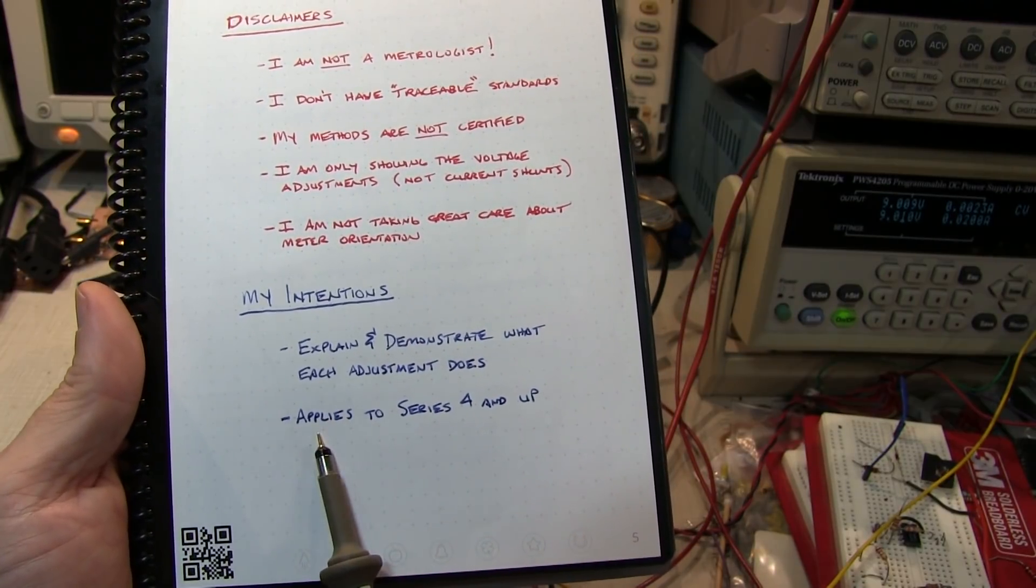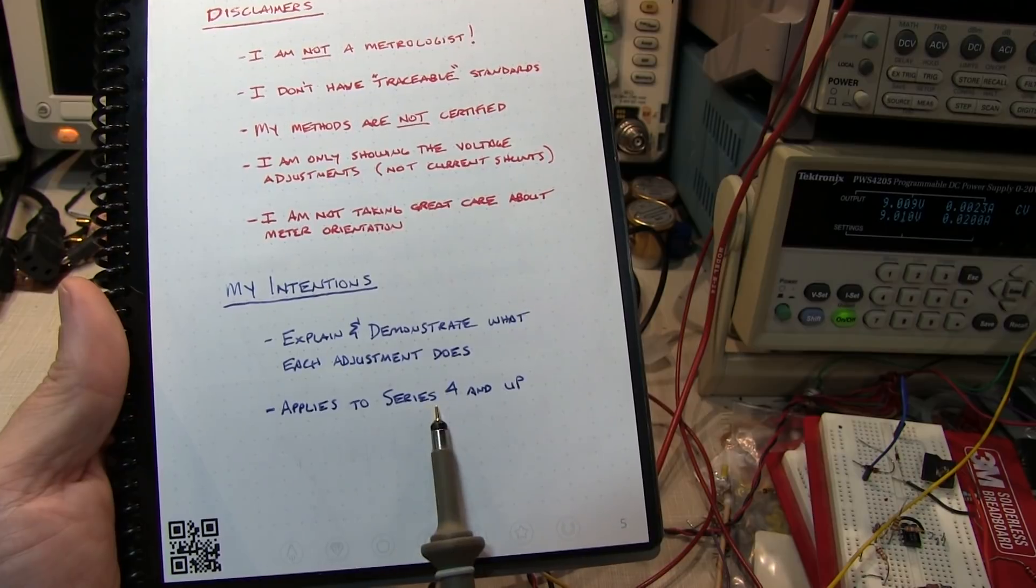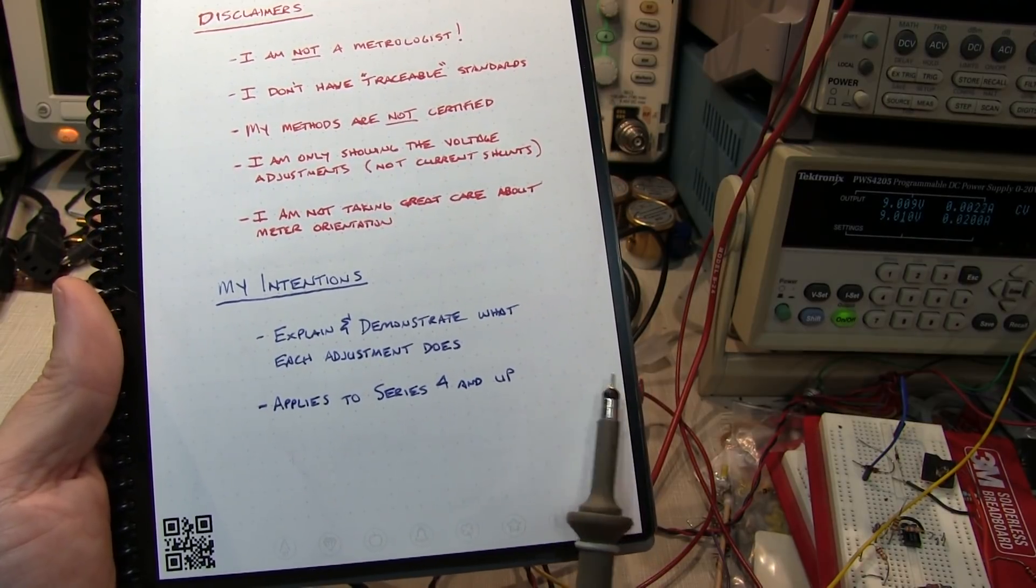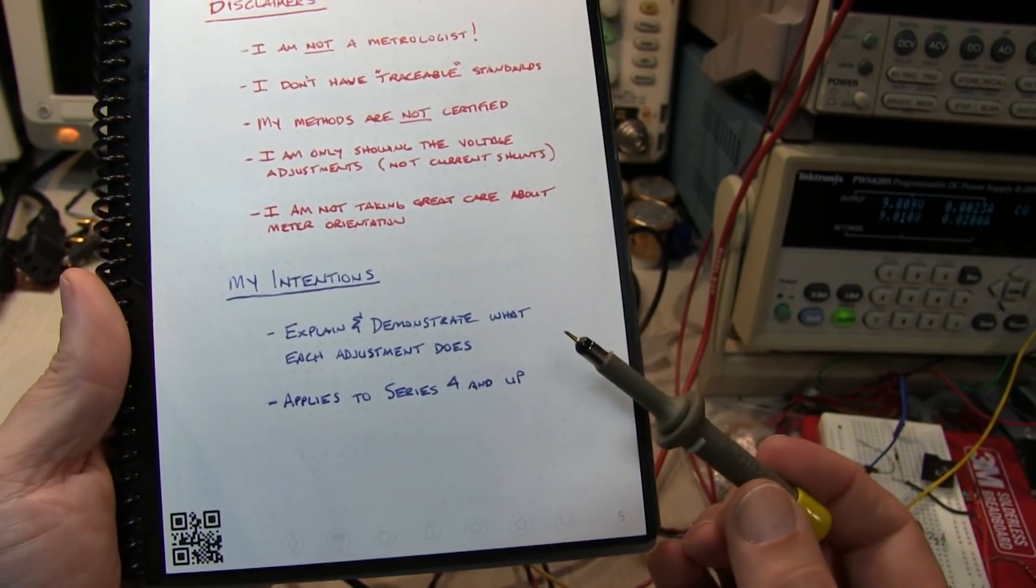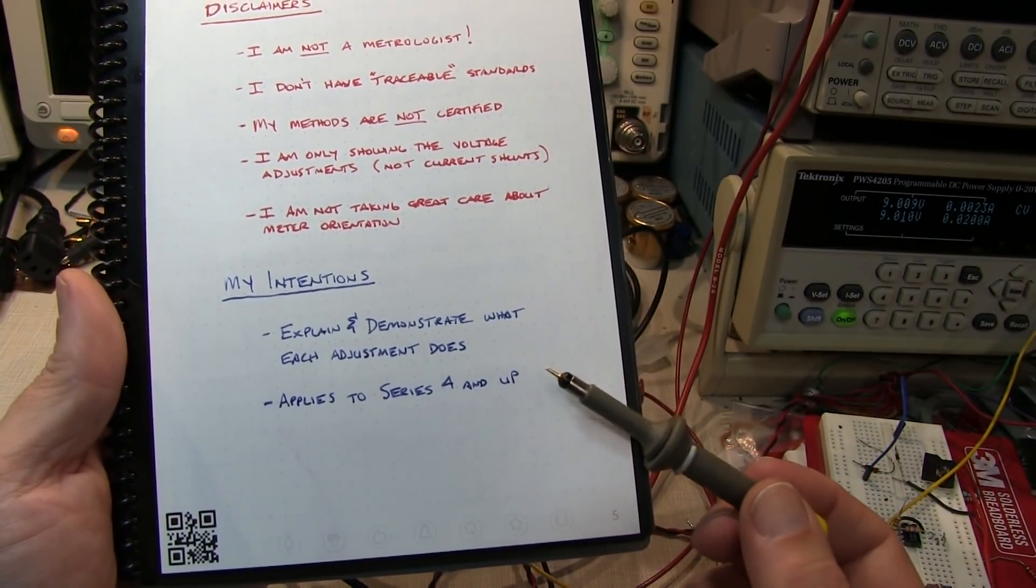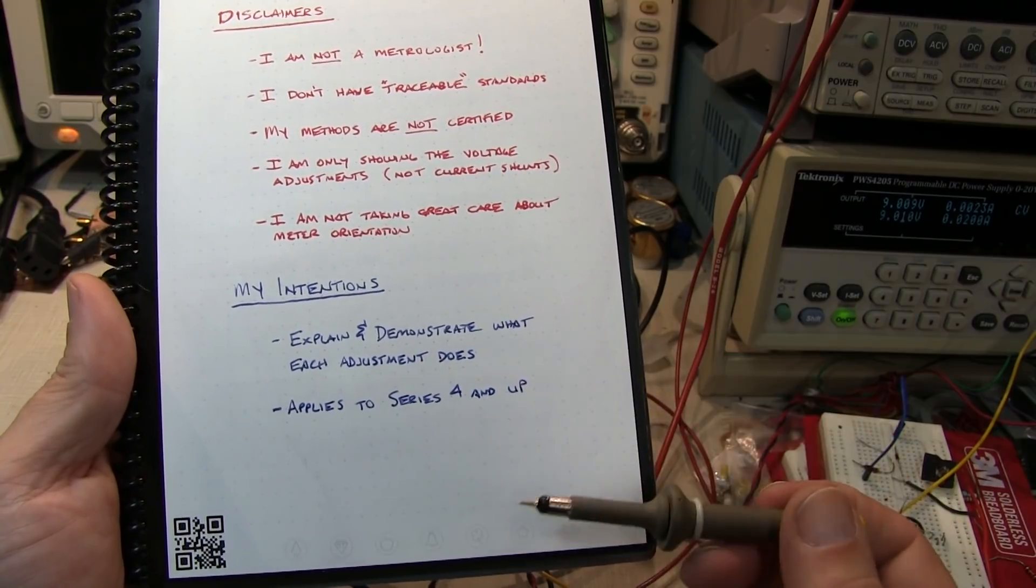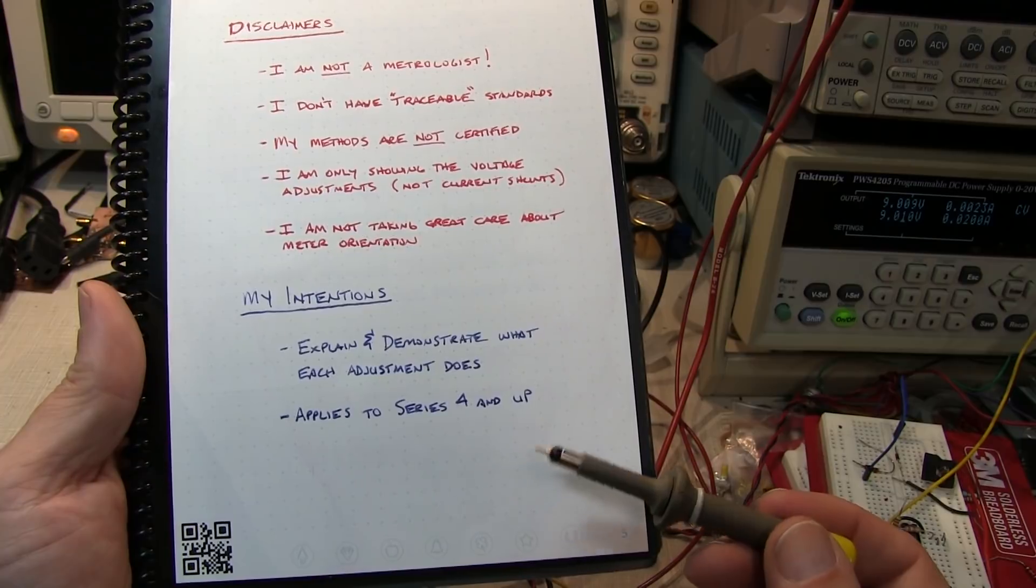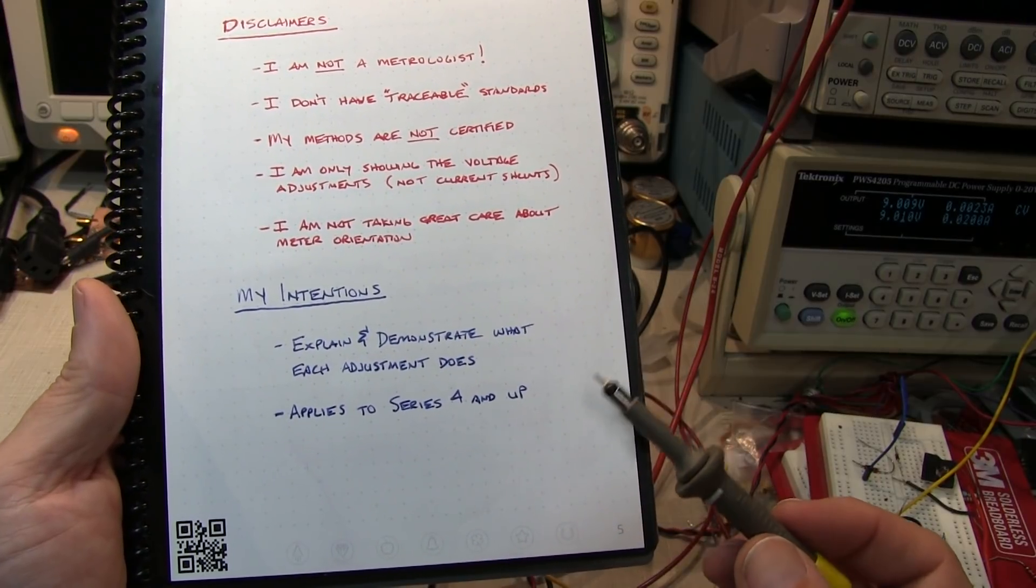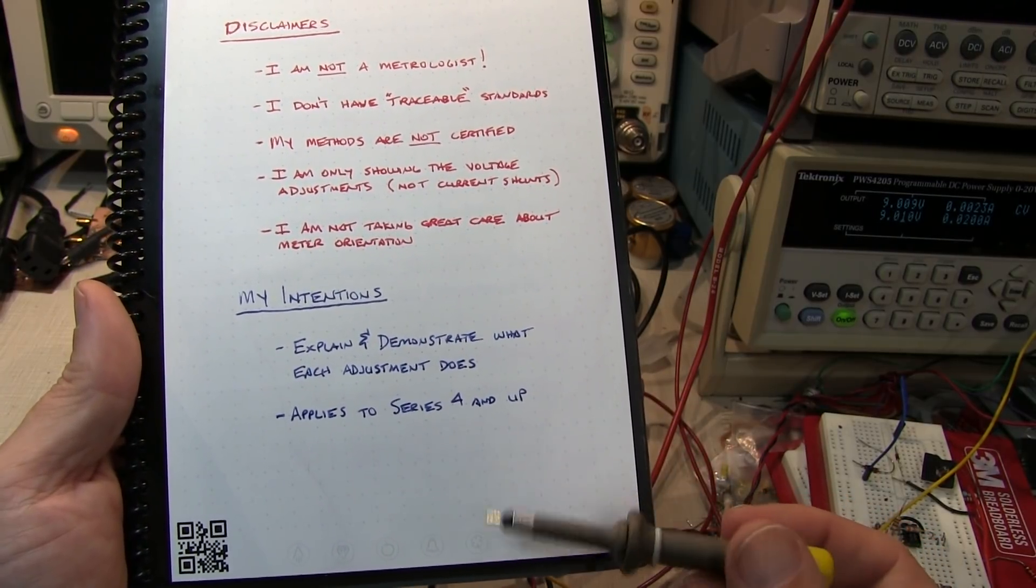My intentions are to explain and demonstrate what each adjustment does. These adjustments apply to the series 4, 5, 6, 7, and 8. Again, I'm not a metrologist. If you are one or have worked in a cal lab or meter shop, please leave a comment to point out things you would do differently. I think it would be instructive for me and all the other viewers.